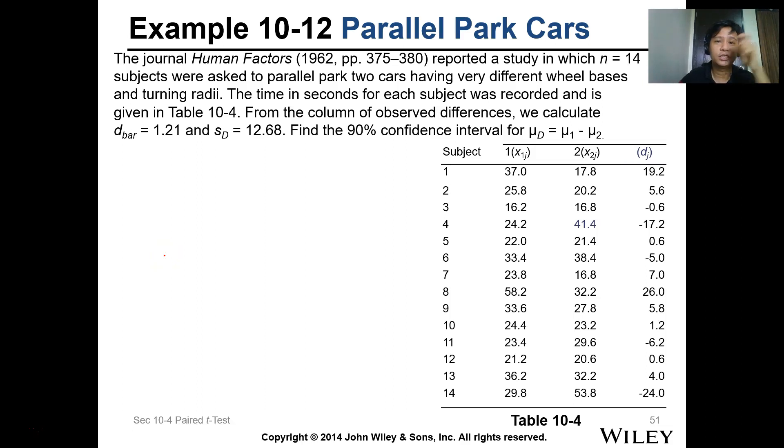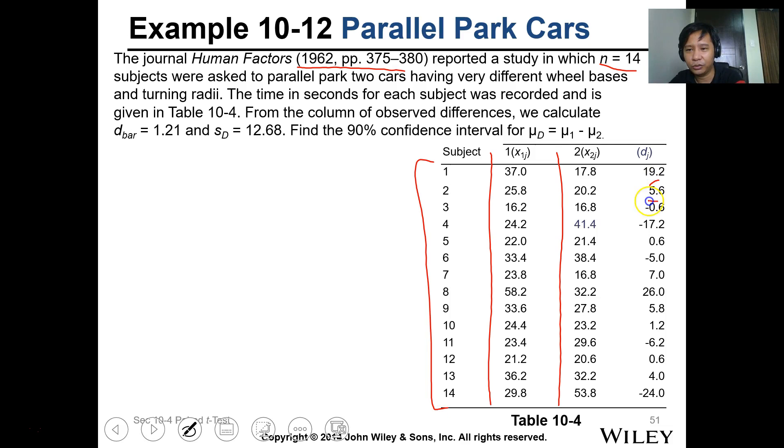So let's answer this example for the interval for the difference of data of paired samples. The journal Human Factors published in 1962, pages 375 to 380, reported a study in which 14 subjects were tasked to parallel park two cars having very different wheelbases and turning radii. The time in seconds for each subject was recorded and is given in Table 10-4. So this is for the first car, for the second car, for the 14 subjects. And we took the difference of each sample. So from the column of observations that was calculated, if you take the mean of this, the d bar is 1.21.